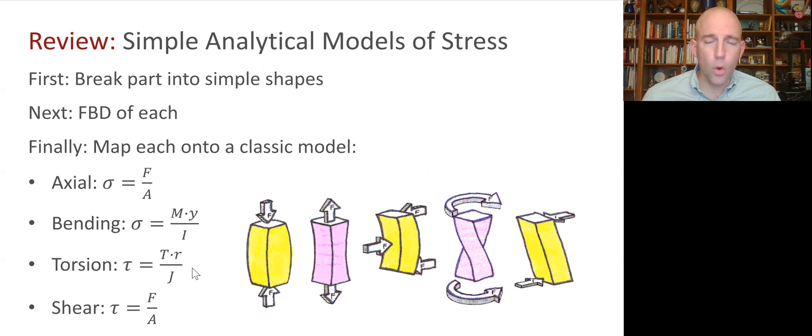Another is torsion, where we have tau equals TR over J. Here T is the torsional moment, R is the distance from the centroid, and J is the polar moment of inertia of the cross-section. And of course, shear, F over A, except that the force would be along the surface of the cut, and A is the cross-sectional area.